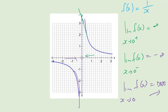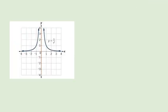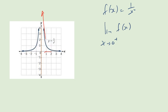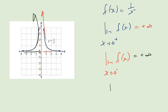Now consider f of x equals 1 over x squared. As x approaches 0 from the right, the function shoots up to positive infinity. As x approaches 0 from the left, it also shoots up to positive infinity. So what is the limit of f of x as x approaches 0? Think about that.